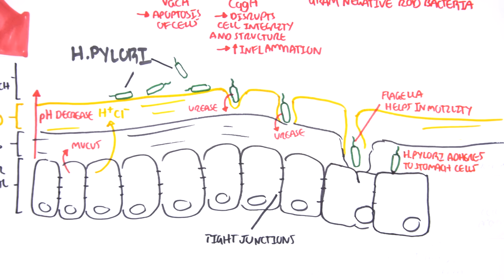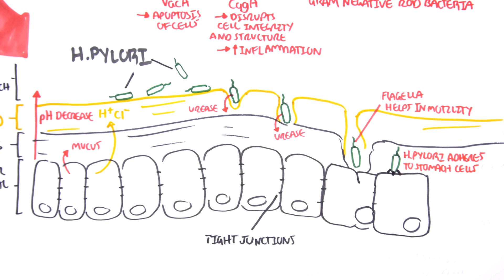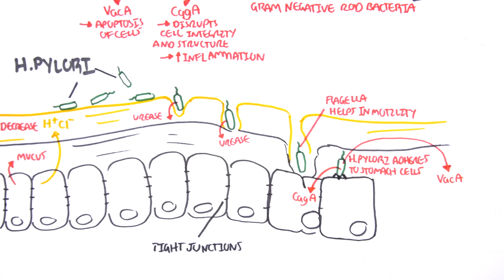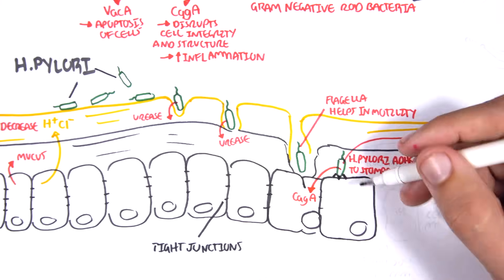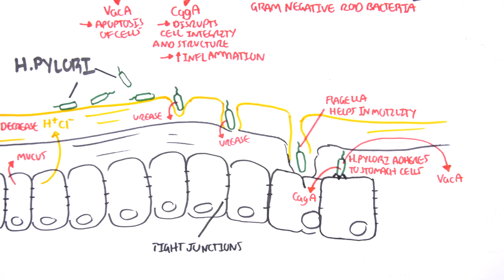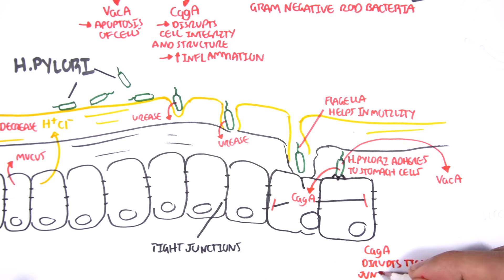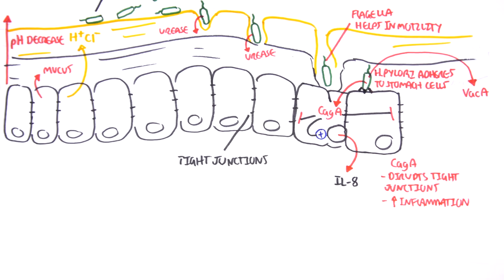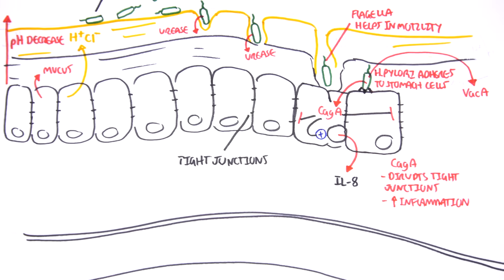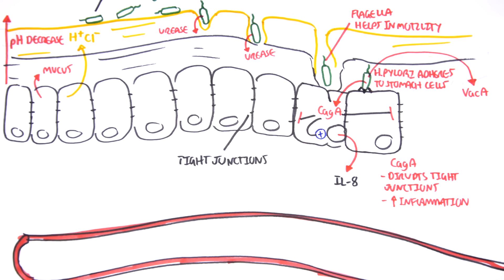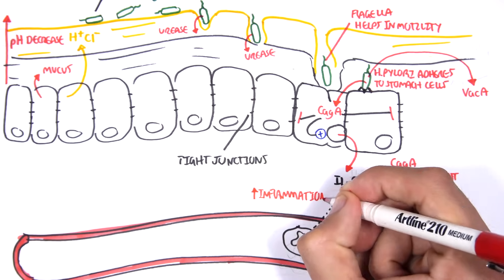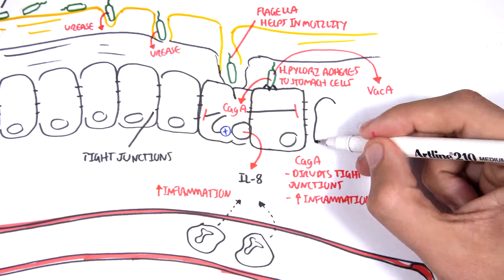Once H. pylori makes contact with the stomach cells, it adheres using lipopolysaccharides. Once adhered, it secretes the dangerous exotoxins CagA and VacA. CagA disrupts cell integrity and breaks down tight junctions between stomach cells. At the same time, CagA stimulates production of cytokines such as interleukin-8, which is a chemokine that attracts neutrophils into the area. Neutrophils are highly inflammatory and damage the stomach tissue.